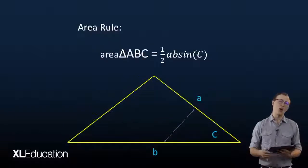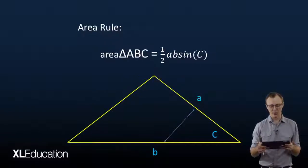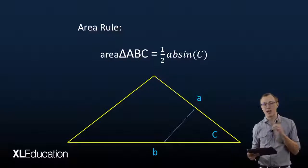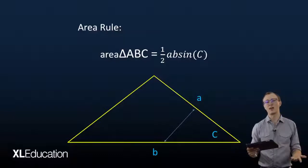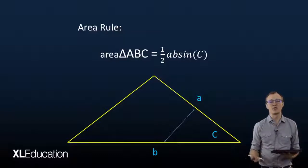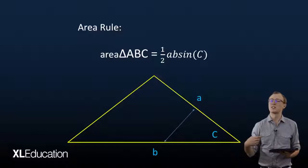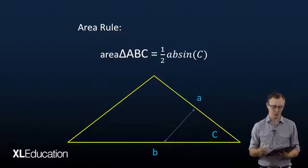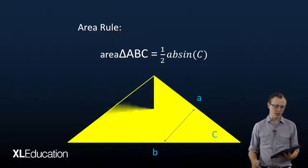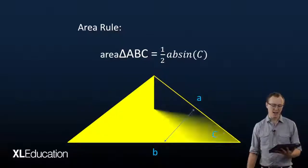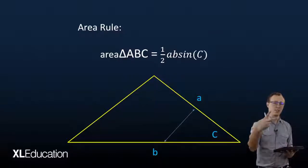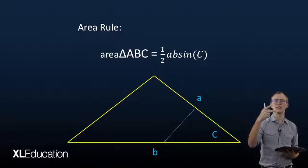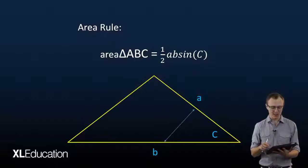Our third tool is the area rule. Now the area rule is really easy to pick out because it's the only one that has to do with area. So if you have a question that has area in it or asks you to find area, the only thing you can use is the area rule. The area rule is about the area of the triangle, and again in order to use the area rule we need peace. You need two sides and an included angle. You need an angle between those sides.